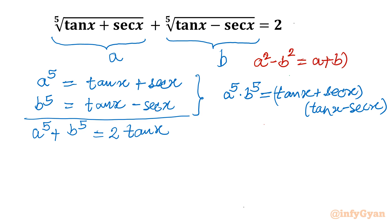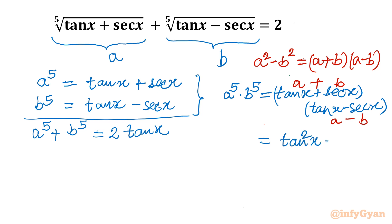Using the difference of squares formula: A²− B² = (A+B)(A−B). So (A+B)(A−B) is written here. Therefore A⁵ × B⁵ = tan²x − sec²x. Now using the trigonometric identity sec²x = 1 + tan²x, we get tan²x − sec²x = −1.